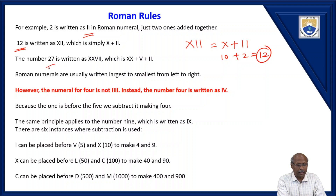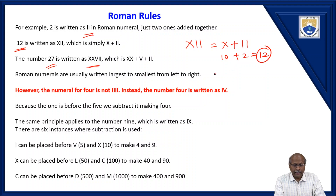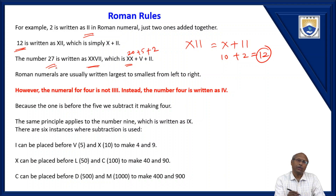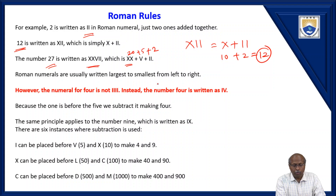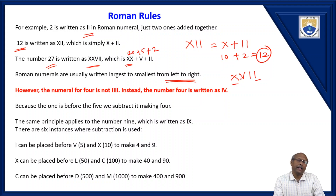Similarly, if I give the number 27, the value is XXVII. XX is 10 plus 10 = 20, V is 5, then two I's that is 2, so totally 27. Roman numerals are usually written in largest to smallest from left to right — always the smallest will be the rightmost and the biggest value will be leftmost.